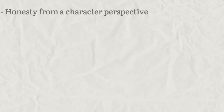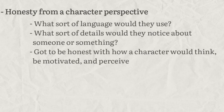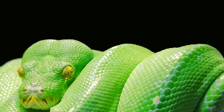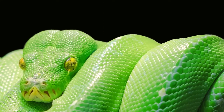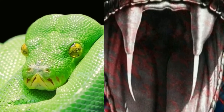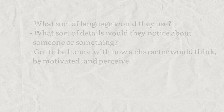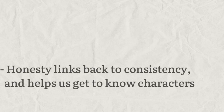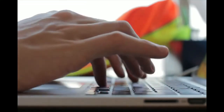I also want to talk about honesty from a character perspective. When describing things from someone else's perspective, you really need to think about how that person would think — what sort of language would they use, what sort of details would they notice about someone or something? A reptile enthusiast might describe a snake as slender, smooth, and beautiful, while a child who's afraid of snakes would probably describe the same creature as creepy or scaly. You've got to be honest with how a character would think, be motivated, and perceive the world. This honesty links back to consistency and can also really help us learn about the character. Being correct in your writing is not just about presenting facts to the best of your ability, but it's also about being honest to your audience.